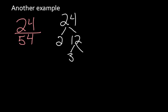2 is prime, but 12 can be split into 3 times 4, which can be split into 2 times 2. So for 24, our prime factors are 2 times 2 times 2 times 3.